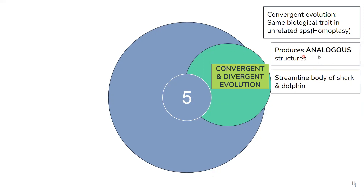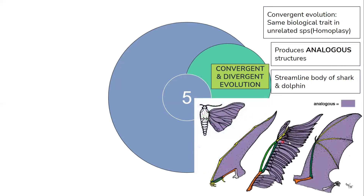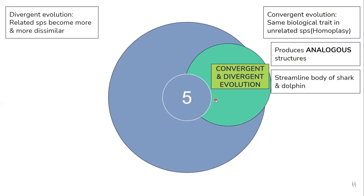This is an analogous structure — unrelated species having the same biological trait. Another example: these are all analogous structures — wings — however none of these are evolutionarily related to each other. So unrelated species can share the same biological trait, in this case a wing. Next is divergent evolution, which is opposite to convergent evolution — related species start becoming more and more dissimilar.